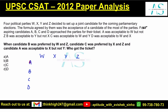What is given? A was acceptable to W, but not Z. B was acceptable to Y, but not X. C was acceptable to W and Y. D was acceptable to W and X.